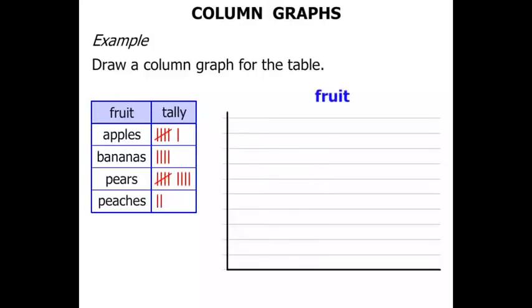So there's our graph. Requires a title. The title is simply fruit: apples, bananas, pears and peaches. And on the left side that's the number of the various fruits.